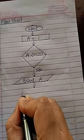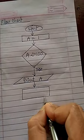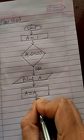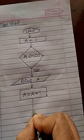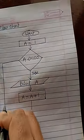Again, we are increasing the value of a by 1. So, we have used processing box. A equal to a plus 1. And after that, we are moving to this point again.